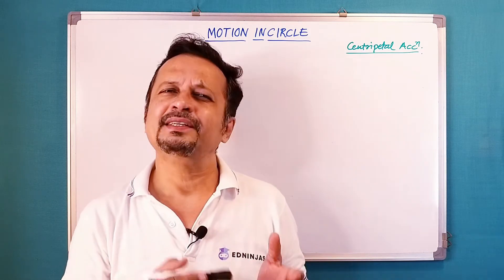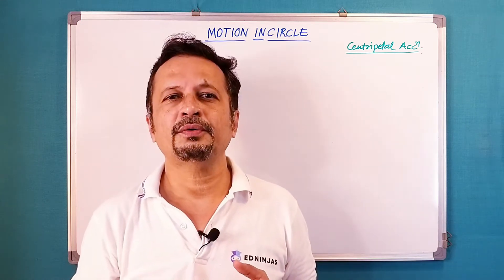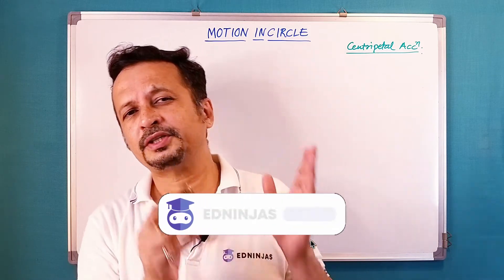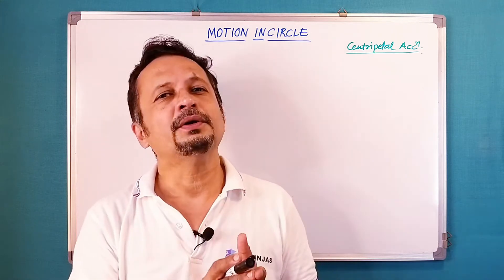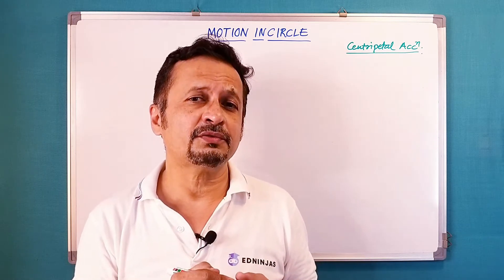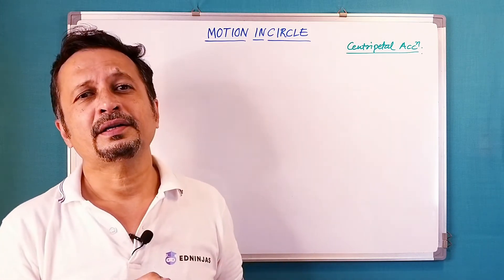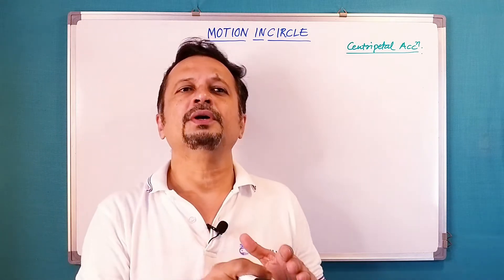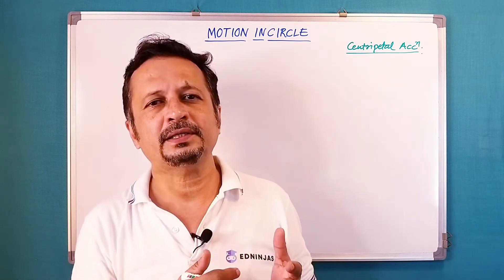We call this centripetal or center-seeking acceleration. In the previous video we did some basic operations — rate of change of velocity — and found that v equals r·omega and acceleration equals v·omega, meaning linear velocity multiplied by angular velocity gives centripetal acceleration. In this video we are going to get a little more clarity on acceleration.